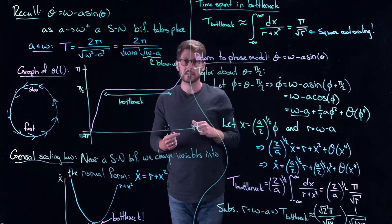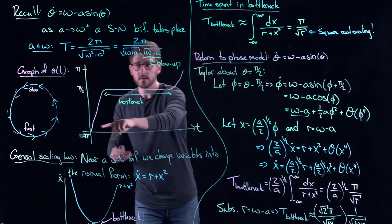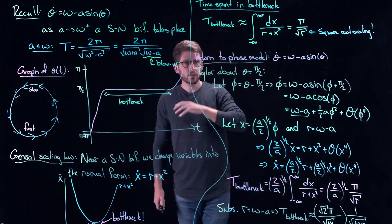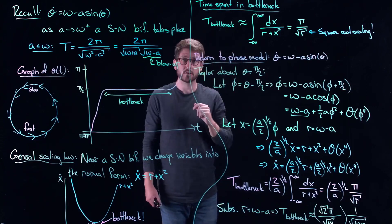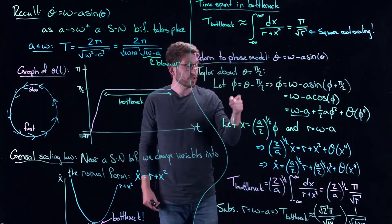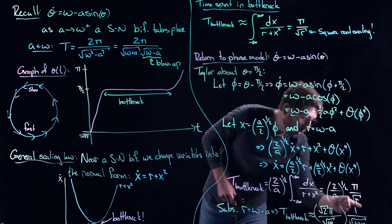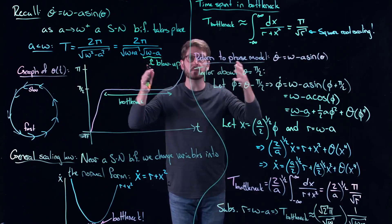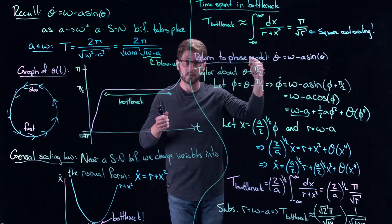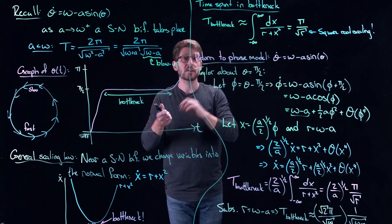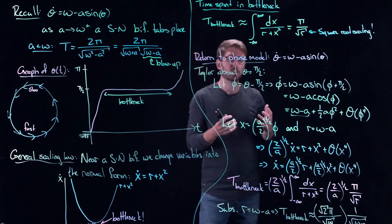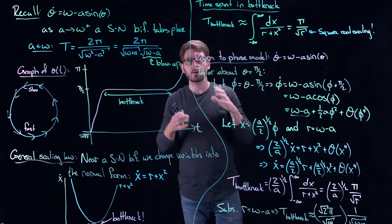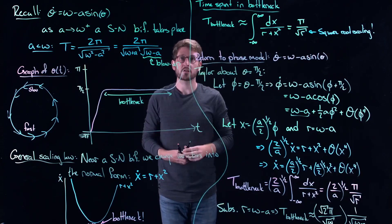Even though there are no fixed points, we still get a sense of when a saddle node bifurcation would be taking place. If you start seeing graphs with this long bottleneck, it's typically a precursor to a saddle node bifurcation. I urge you to take any model where you found a saddle node bifurcation and try to find these bottleneck periods — it always looks like this. It might have some messy numbers out front, but it's always that square root according to where the bifurcation takes place. The time spent in the bottleneck increases like one over the square root of the distance to the bifurcation value. Really cool stuff — ghosts and bottlenecks are extremely important for physical scenarios, especially on the circle where you see this fast and slow oscillation. In the next video, we're going to do a fun little application to fireflies.